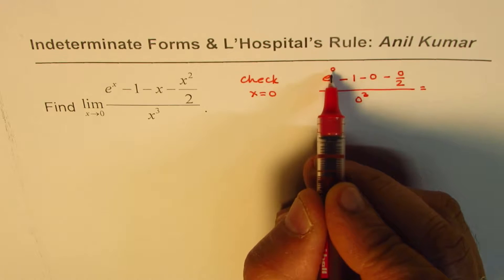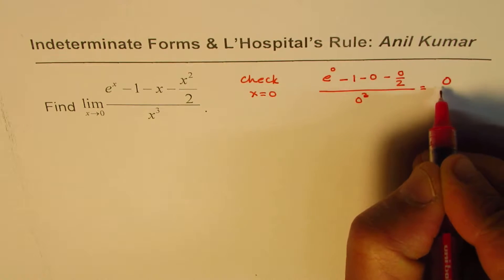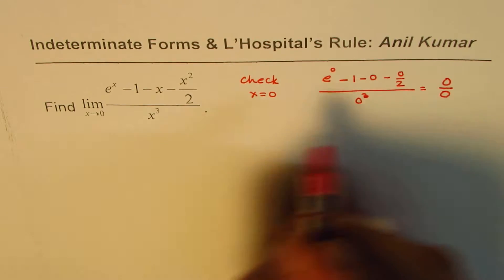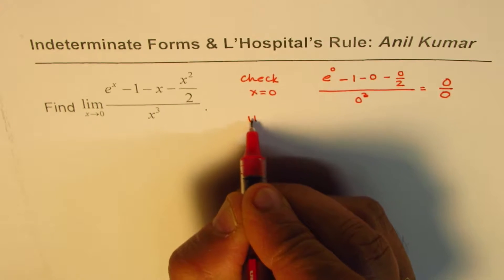And that is, e to the power of 0 is 1, 1 minus 1 is 0. These terms are already 0, so we get 0 over 0. Since we get 0 over 0, which is the required indeterminate form, we could apply L'Hospital's rule.